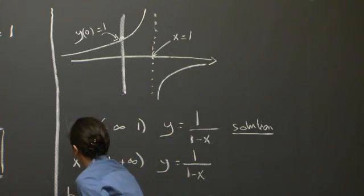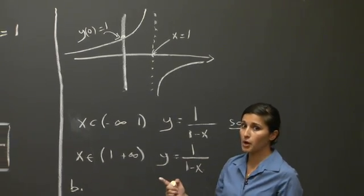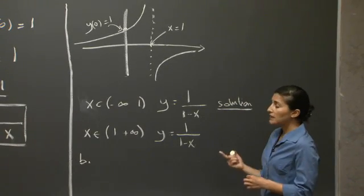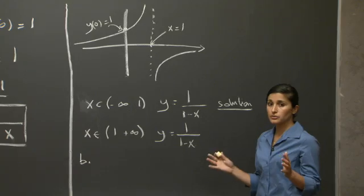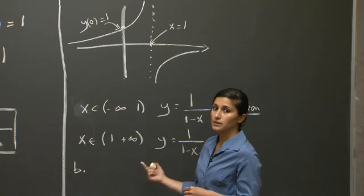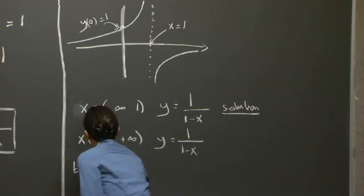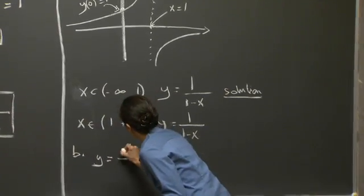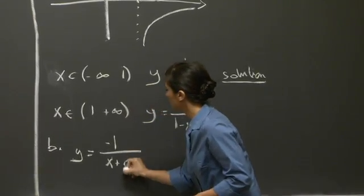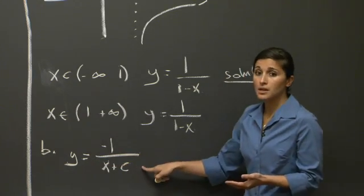Now, if we move on to the solution of the second part of the problem, part b, we were asked to find the general solution of the problem, which means that we need to account for all the solutions, regardless of their initial condition. We already answered this partially during the solution of part a, where we solved using indefinite integrals and arrived at the solution minus 1 over x plus c, where here we had an undetermined constant of integration. So this is one general solution.